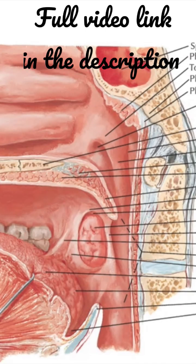Palatine tonsils are a pair of almond-shaped masses of lymphoid tissue situated bilaterally in the lateral wall of the oropharynx. They are derived from the lateral groups of Waldeyer's ring of lymphoid tissue, which encircles the commencement of the digestive and the respiratory tubes.